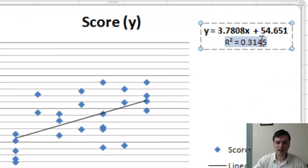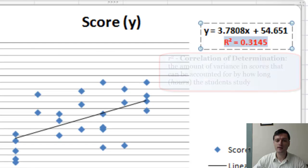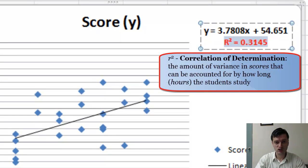Then this is the R squared or the correlation coefficient squared. Otherwise, it's the statistic called the coefficient of determination, because this would explain in percentage, 31.45%, the amount of variation in the scores variable when we know the hours studied.